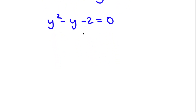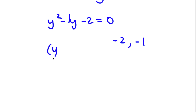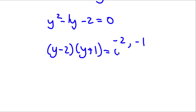Now we can simplify this. So what two numbers multiply to get negative 2 and add up to get negative 1? Well that's going to be negative 2 and 1. So now we have y minus 2 times y plus 1 is equal to 0.